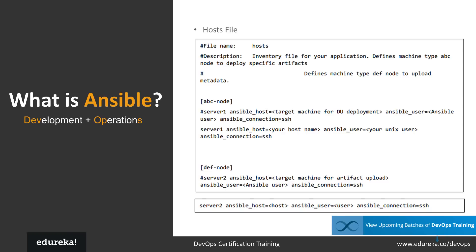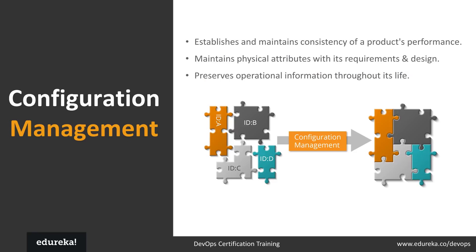After connecting to nodes, Ansible pushes small programs called Ansible modules, runs them on your nodes, and removes them when finished. It also manages your inventory in simple text files — host files — where you can group hosts and control actions on specified groups in playbooks.